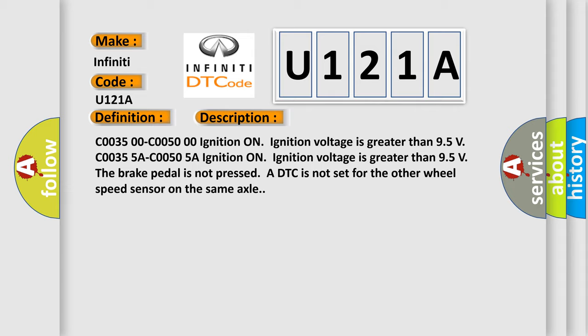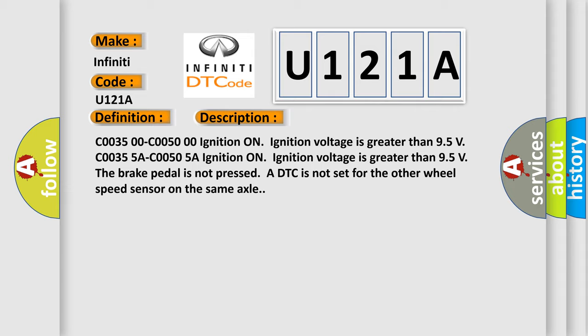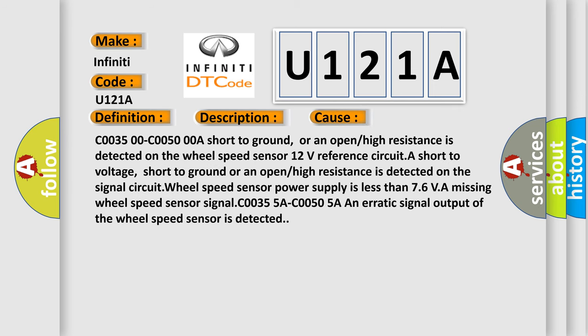This diagnostic error occurs most often in these cases: a short to ground, or an open or high resistance is detected on the wheel speed sensor 12 volts reference circuit; a short to voltage, short to ground, or an open or high resistance is detected on the signal circuit; the wheel speed sensor power supply is less than 7.6V; a missing wheel speed sensor signal; or an erratic signal output of the wheel speed sensor is detected.